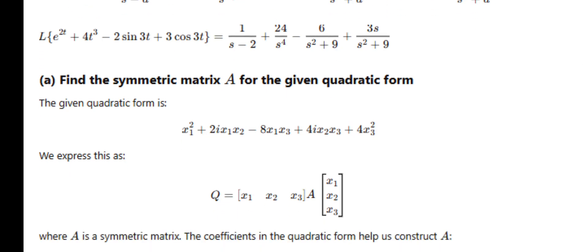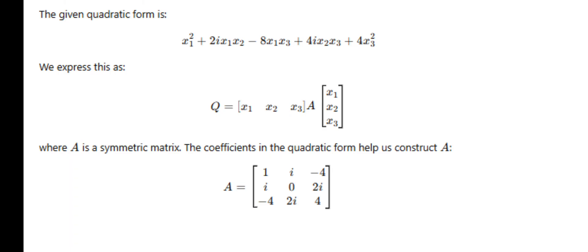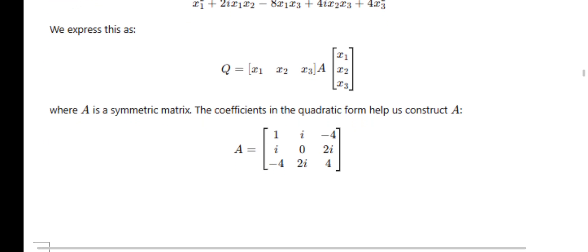Next: find the symmetric matrix A for a given quadratic form. The matrix entries follow the pattern — diagonal entries are coefficients of squared terms, and off-diagonal entries are half the coefficients of cross terms. The matrix rows are: [x₁², x₁x₂, x₁x₃], [x₂x₁, x₂², x₂x₃], [x₃x₁, x₃x₂, x₃²]. Based on this pattern, separate the terms and fill in the symmetric matrix.